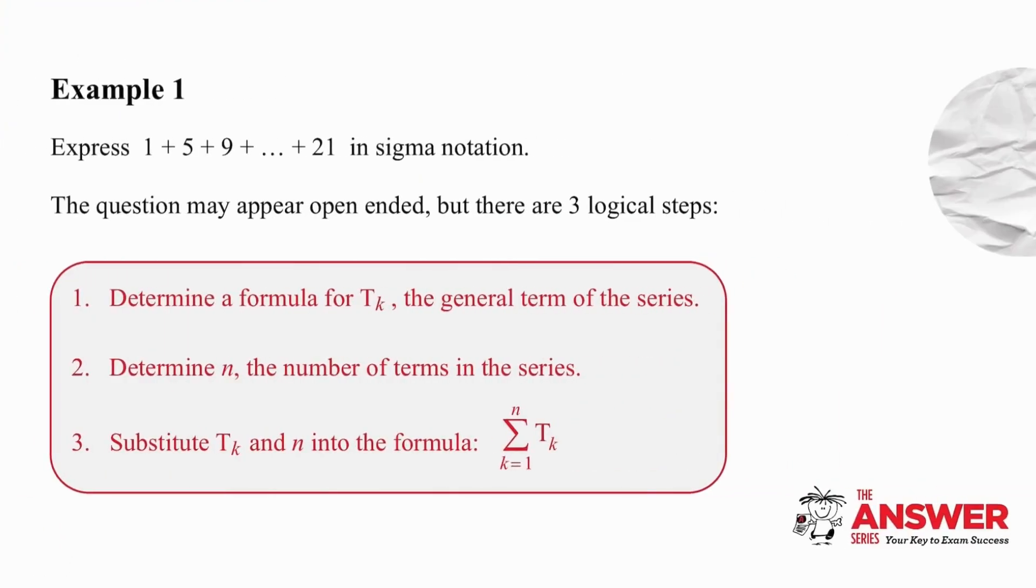In the first example, we are going to take a series of numbers and express them in sigma notation. There are three logical steps that we need to follow. Firstly, we need to determine the general term of the series. Secondly, we need the number of terms in the series. With that information, we are then able to write our expression into sigma notation, making sure that we state the start and end value of substitution, as well as the formula that we are using.